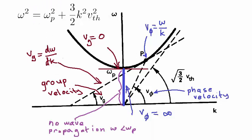Note that the minimum angular frequency is Omega P. There are no frequencies below that, which implies there is no wave propagation for angular frequencies below Omega P. Interestingly, the asymptote to the curve, which is both a group and a phase velocity, has the same value at the square root of 3 on 2 times the thermal speed.